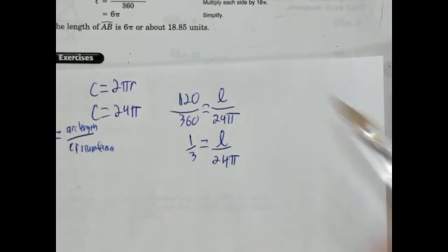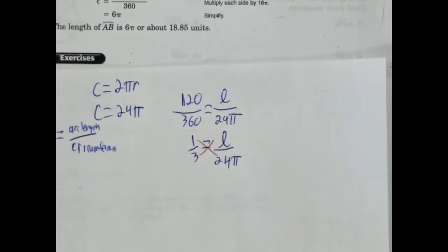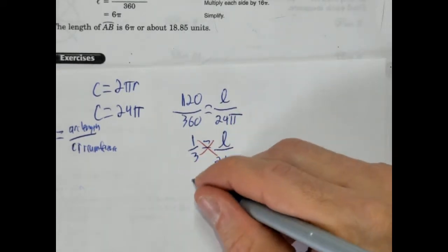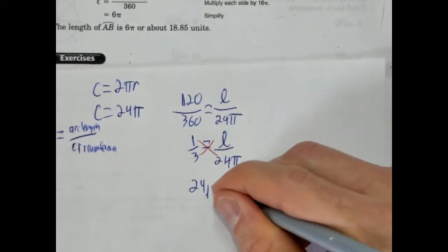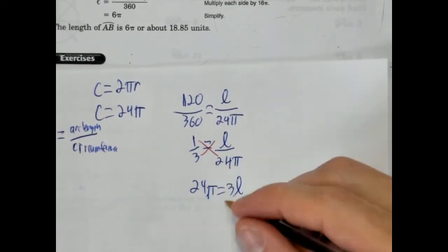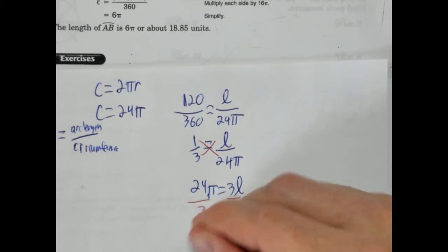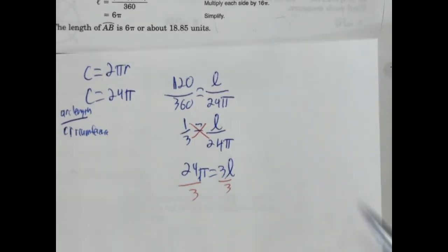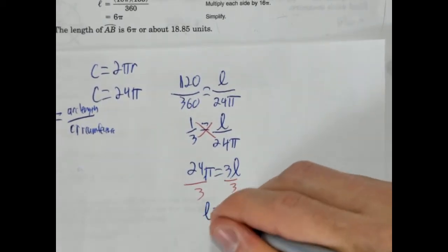We're going to cross multiply here. So we're going to have 24 pi is equal to 3L. We're then going to divide by 3, which is our coefficient.